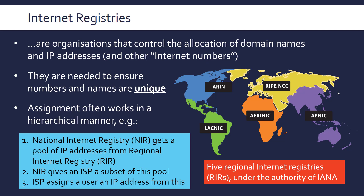Each regional registry has a set range of IP addresses tied to different areas of the world, because an IP address is meant to locate a device geographically. So you can look at an IP address and say it belongs to North America because it was allocated by ARIN. ARIN can give ranges to national internet registries — one for the US, one for Canada, and in Europe, different countries. The UK will have one, and the regional registry gives a subset of their pool to an individual country, along with a country-code domain like .uk, .es, or .de for Germany.